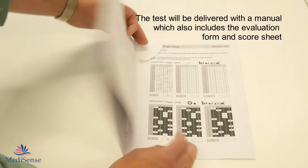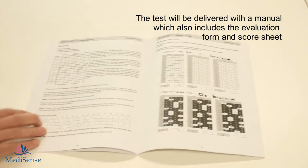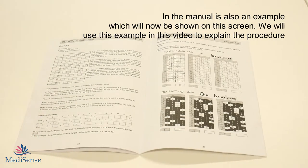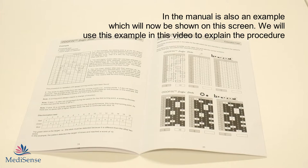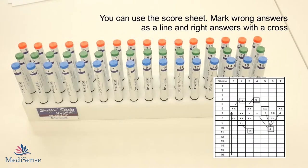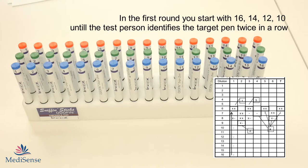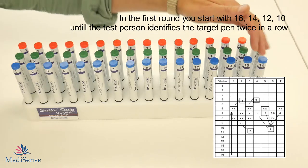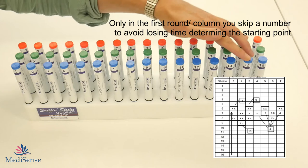In the manual you can find the score sheet on which you can write down if the test person guesses the target pen right or not. If the target pen is not guessed then you continue with the higher concentration and in the first round you skip one set of pens.